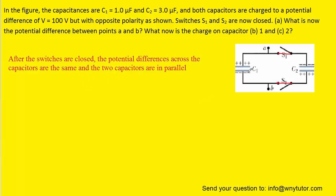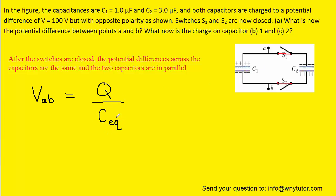We can come up with an expression for the total potential difference between points A and B. In this expression, it's important to understand that the potential difference between points A and B is equal to the total charge across both capacitors divided by the equivalent capacitance of C1 and C2.